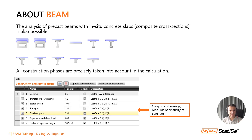In BEAM, we can define construction stages with the corresponding concrete age, which is particularly important for calculating creep and shrinkage and considering the temporal development of concrete's elastic modulus. In addition, loads can be entered in such a way that they only act during a specific construction stage — for instance, formwork loads.